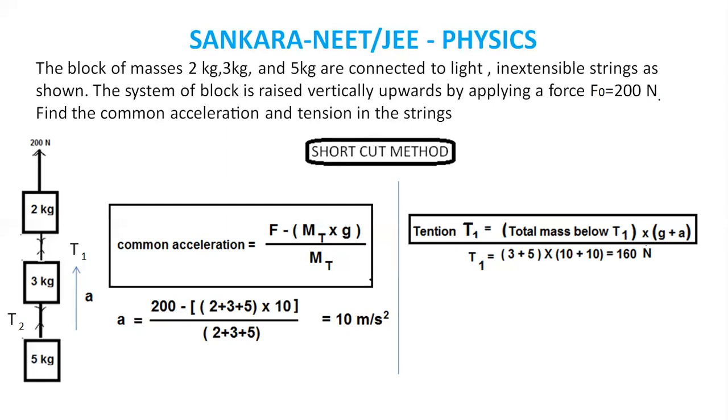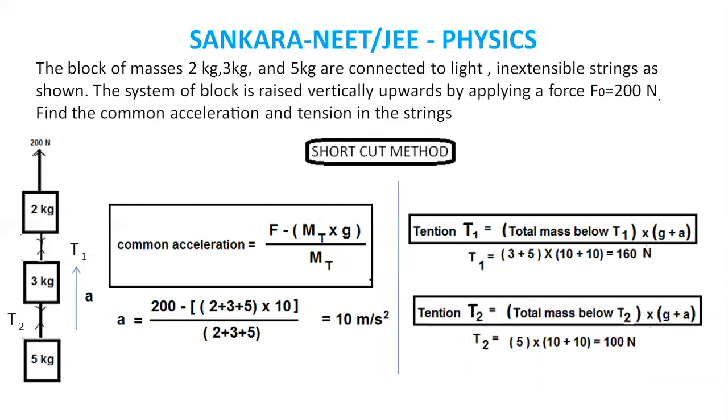For T2, the mass below T2 is 5 kg. T2 equals 5 kg into g plus a, which is 100 Newton.